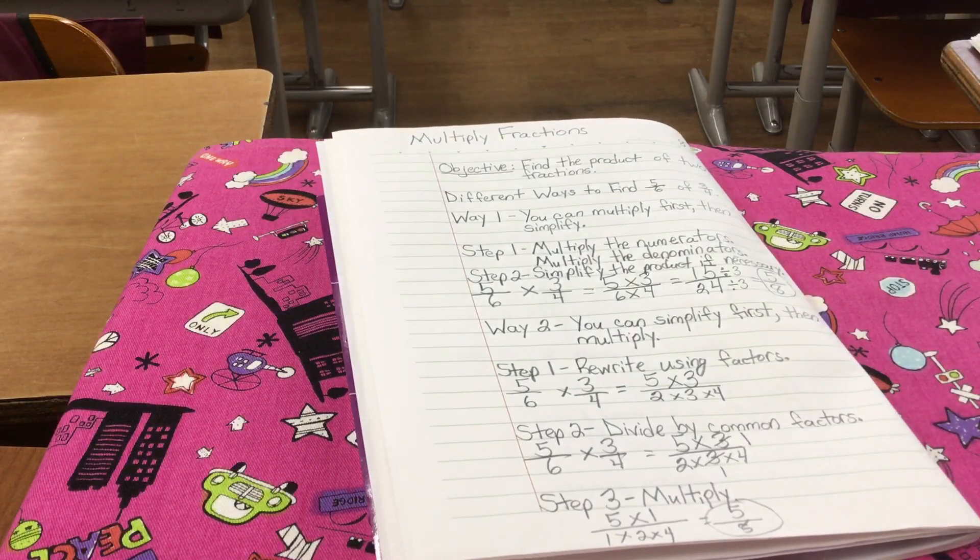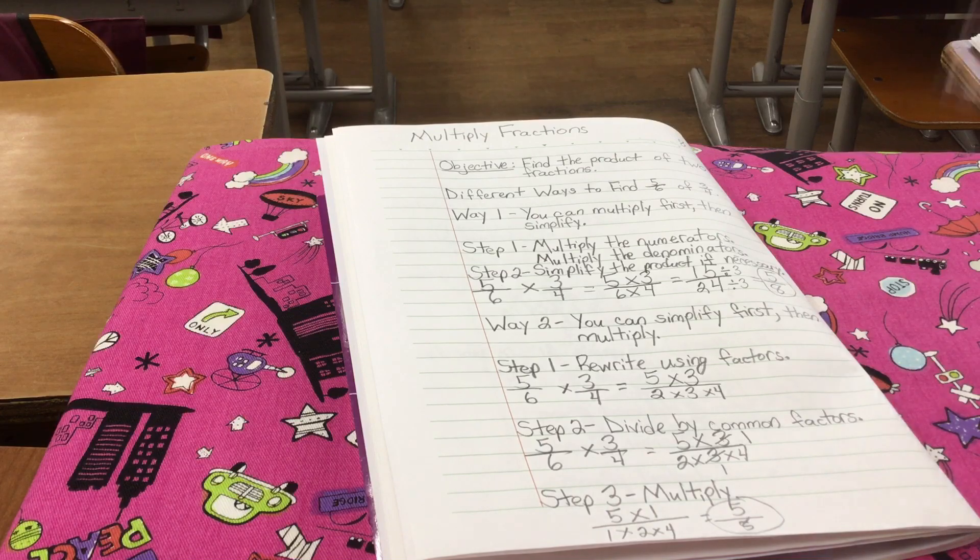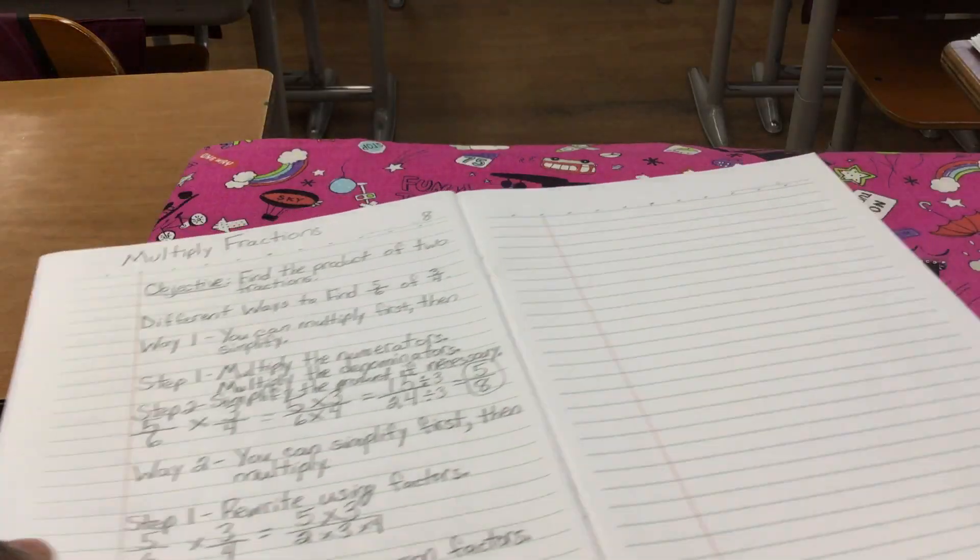So, now, I have five times one over one times two times four. And that's going to give me five over eight as an answer. Two ways. So, now, I'm going to need another page again.